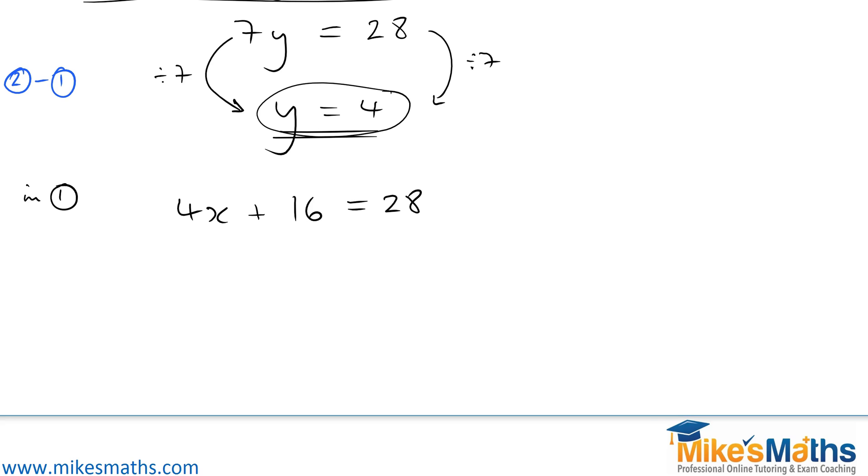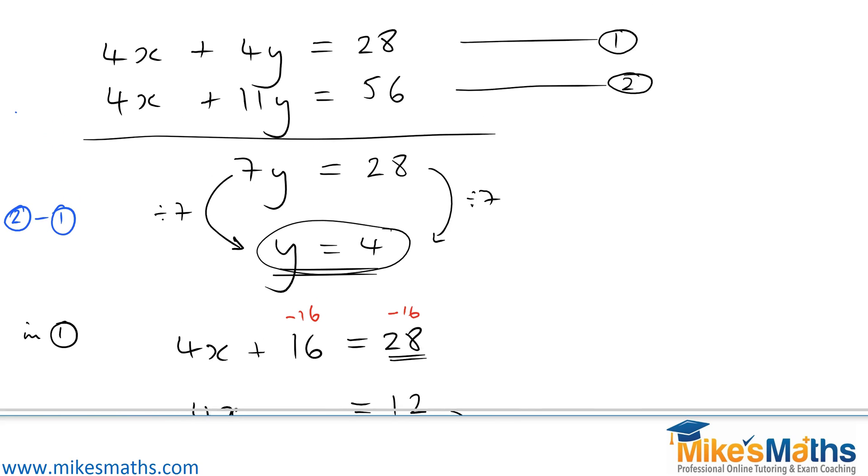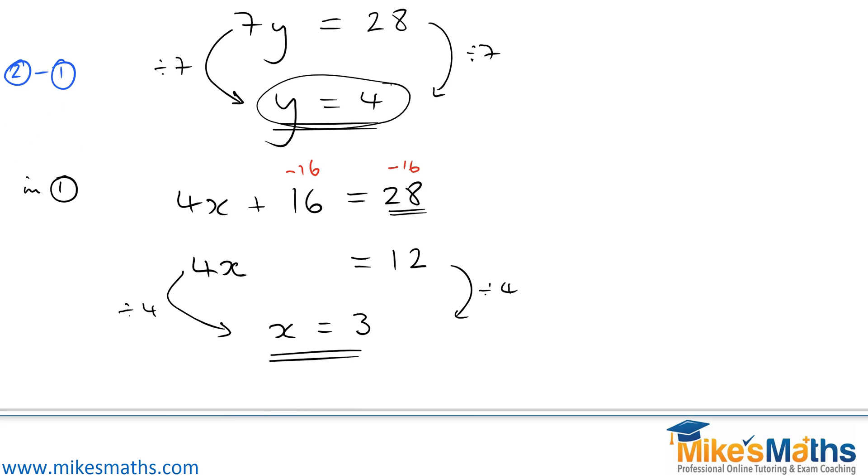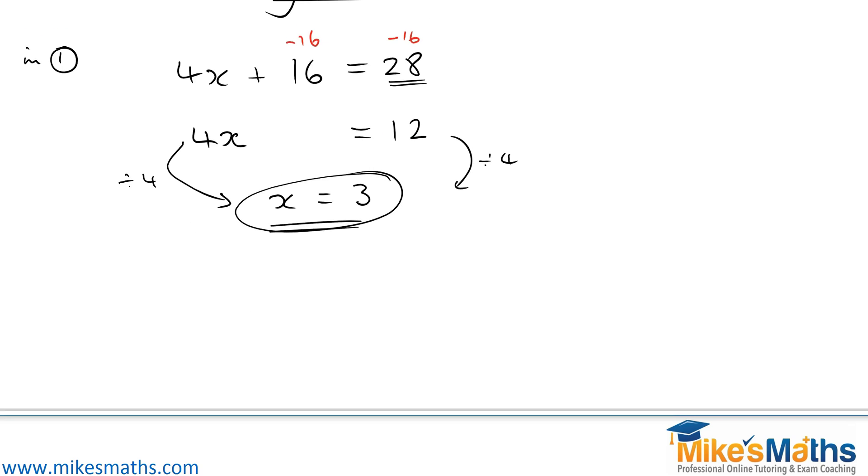So 4x plus 16 equals 28. That's an equation that we can solve. We want to get 4x on its own. So take away 16 from this side of the equation, remembering that if we change one side, we have to do the same change to the other. So we take away 16 from both sides. Write down what's left. The 4x is left. On this side, you've got 28 take away 16, which is 12. How do we get from 4x to 1x? Divide by 4. Therefore, divide the 12 by 4 and we get x equals 3. So we have our solution. This was the original question. Solve these two equations. Our answer is y equals 4 and x equals 3.